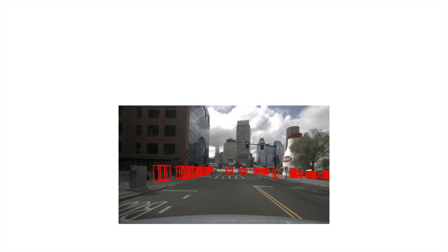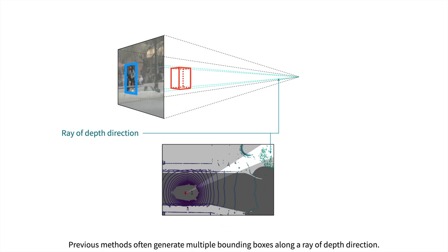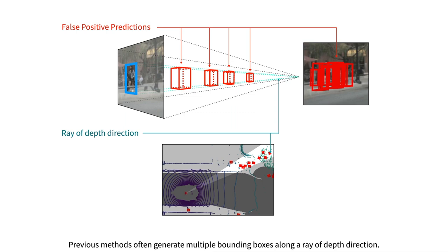The serious problem of false positive prediction happens in previous work. Previous methods often generate multiple bounding boxes along the depth direction. We fix the false positive problem by inserting a depth hint into our model.